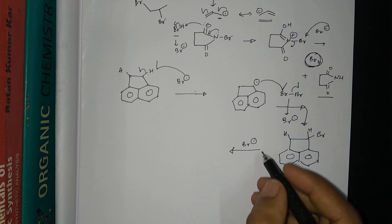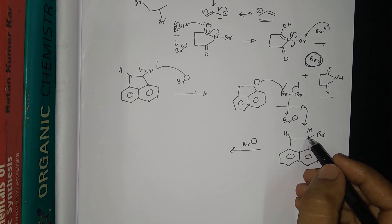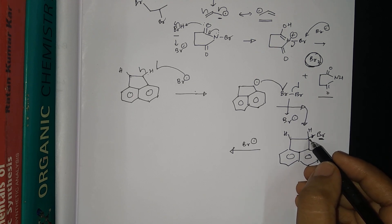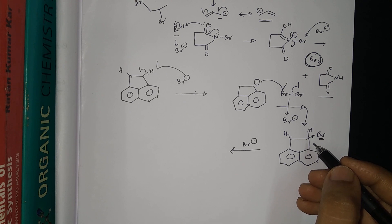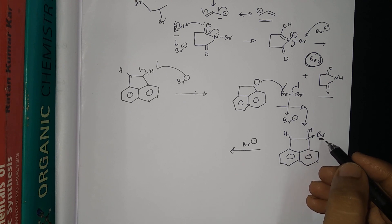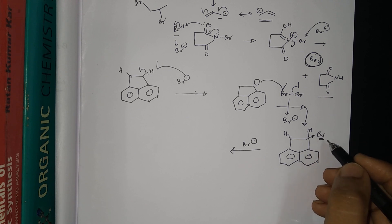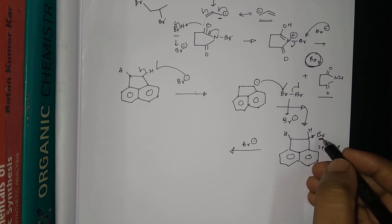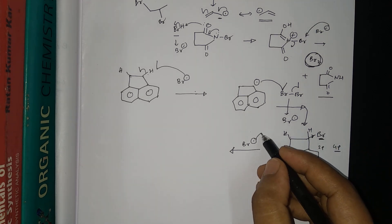Now, the next Br• can react with either of the two remaining benzylic hydrogens. If Br• abstracts from the carbon that already carries a bromine, the radical formed there would be destabilized: bromine has a −I (electron-withdrawing inductive) effect, making the carbon radical — which is already electron-deficient — even more unstable. Also, bromine's 4p orbital is much larger than carbon's 2p orbital, so resonance overlap is poor and it provides no significant +M stabilization. Therefore, the radical does not form on that carbon.